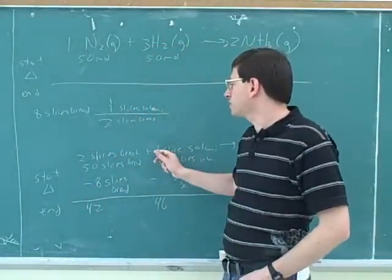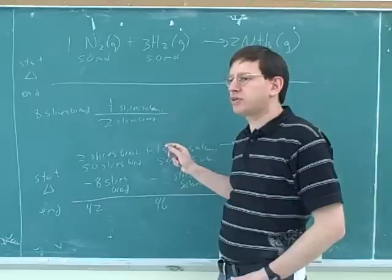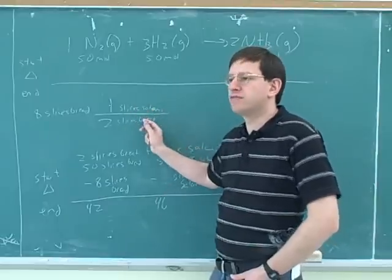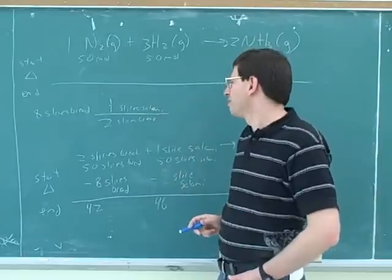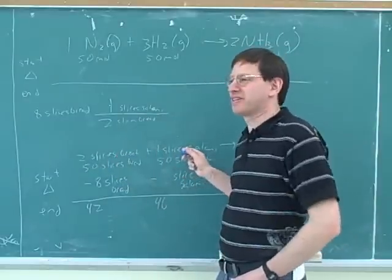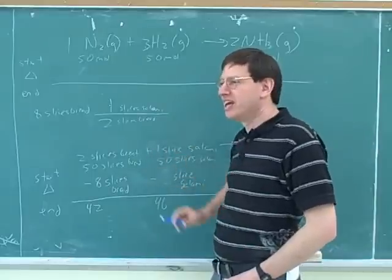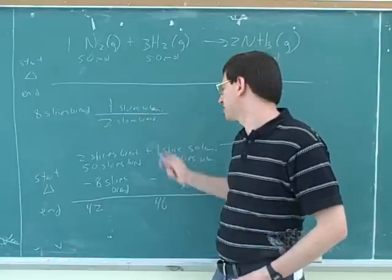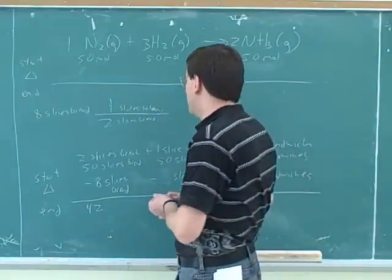So again, this is what the stoichiometric coefficients are good for. The purpose of the stoichiometric coefficients is to give you these conversion ratios. Here I'm not interpreting this in moles. I could say two moles of bread and one mole of salami, but that would be a heck of a lot of sandwiches. But it's the same general principle. Here we're working with slices rather than moles.